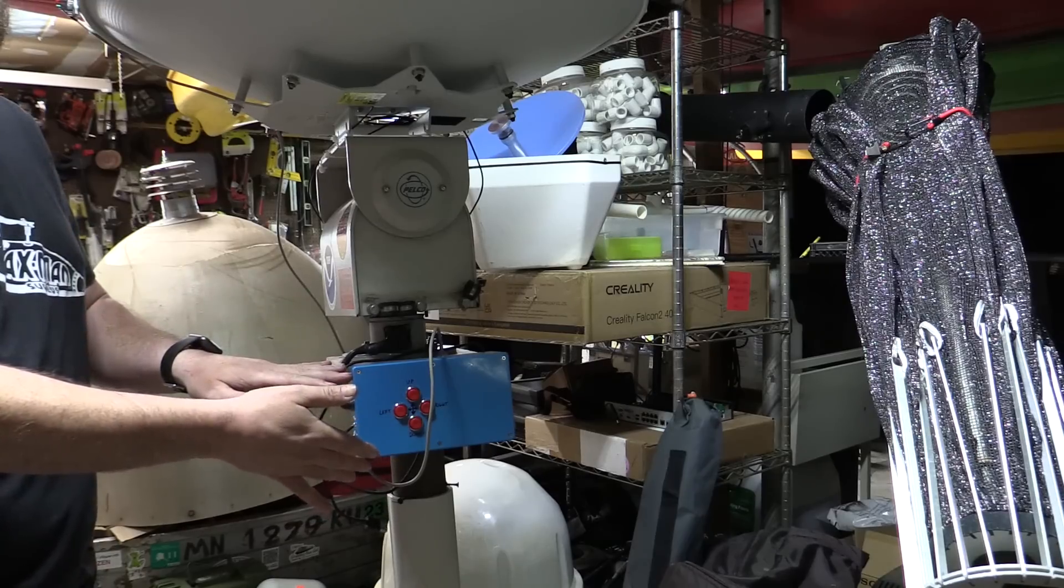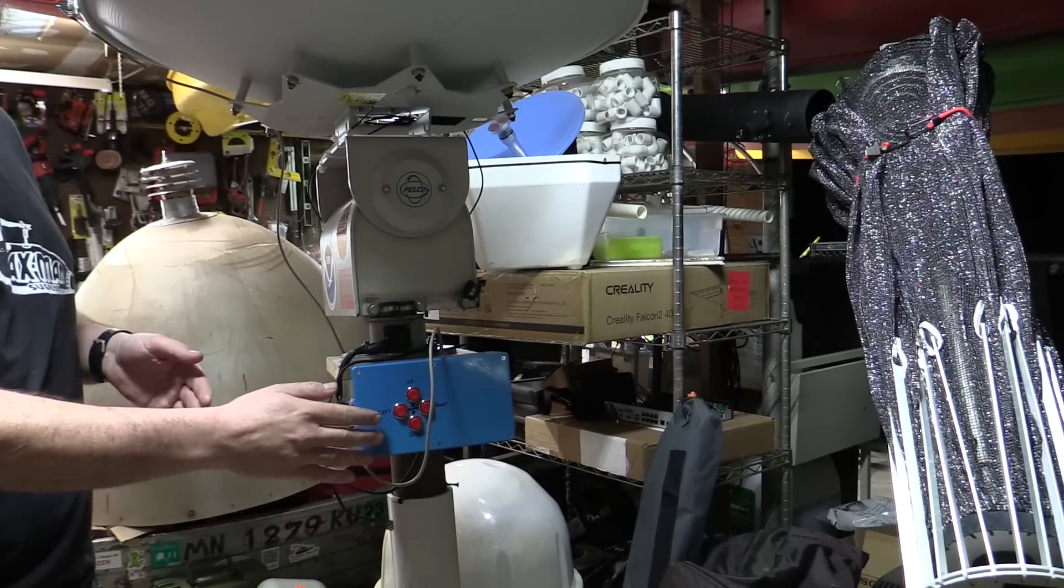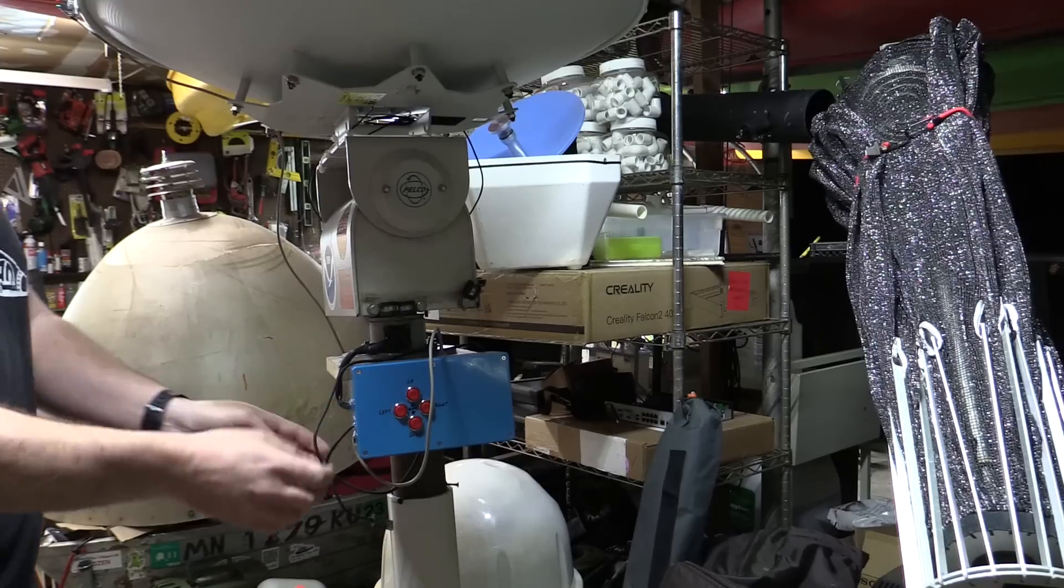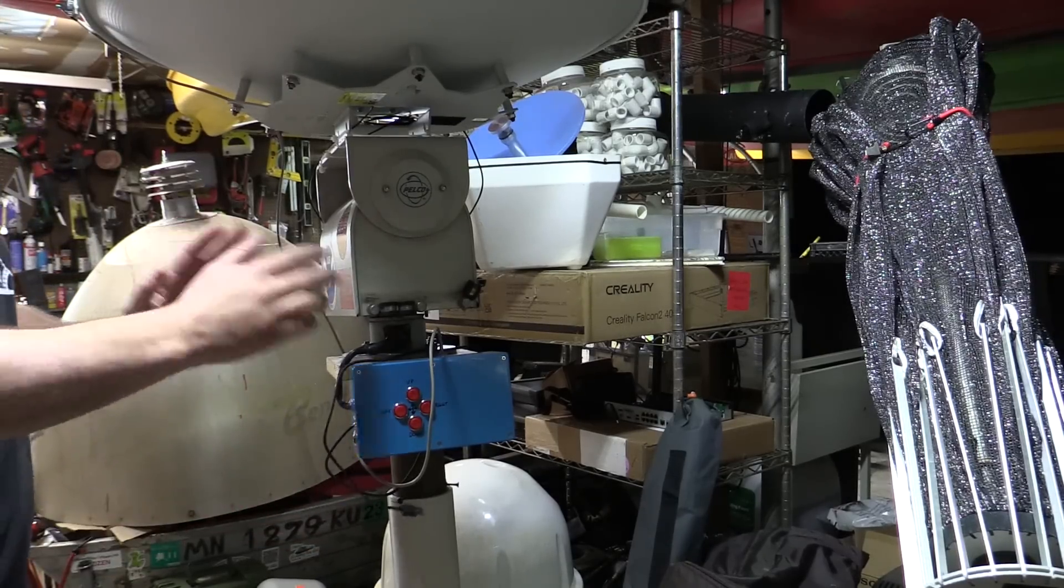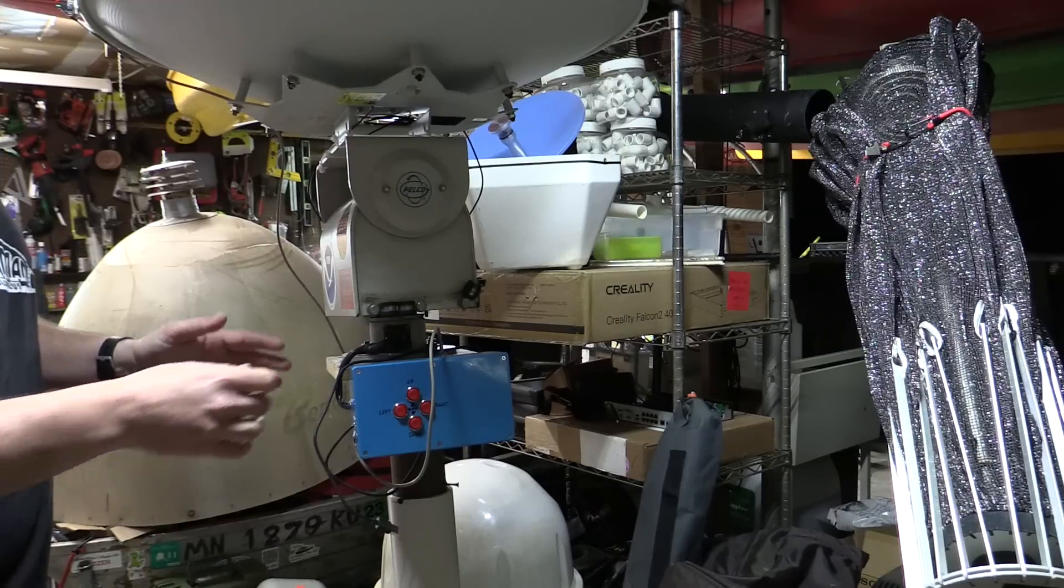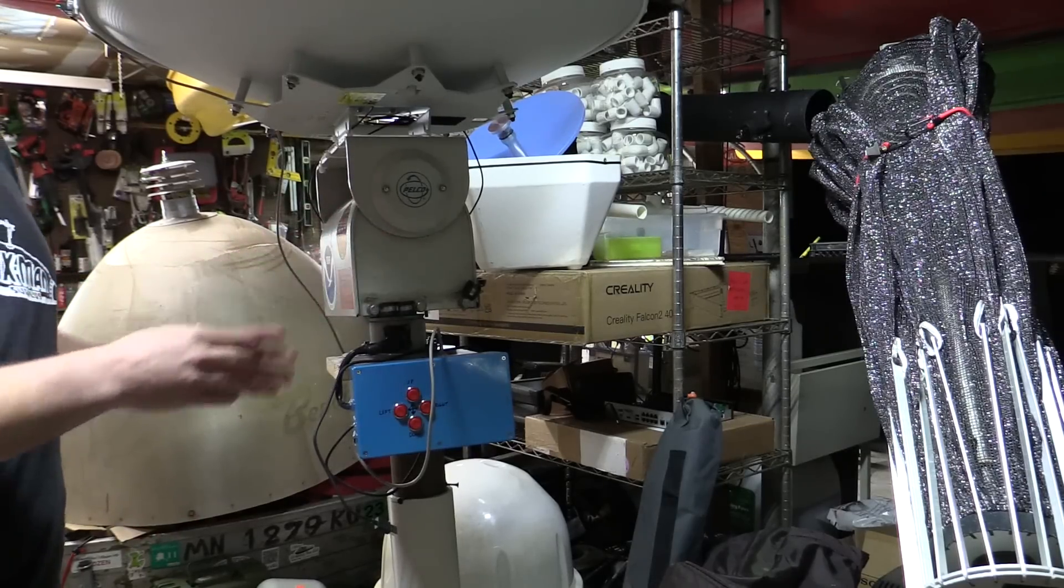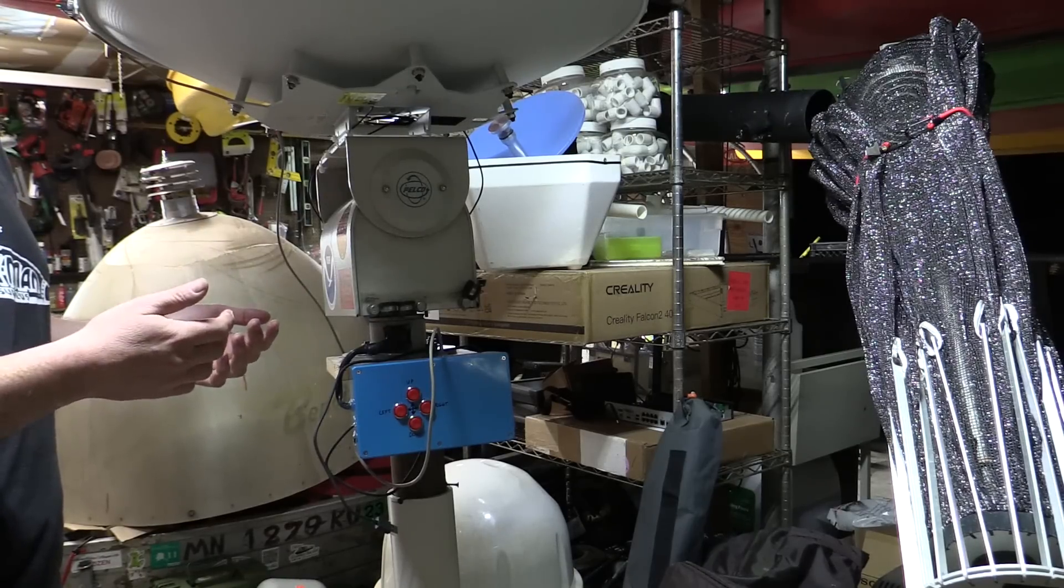Now this one is basically just a security camera pan tilt mount with a little Arduino computer control. So it's got a microcontroller in here, it's got up, right, left, down controlled either manually from the buttons here or from the little Arduino via USB cable out to a computer.